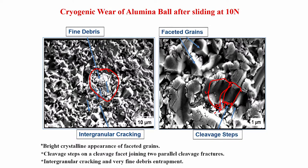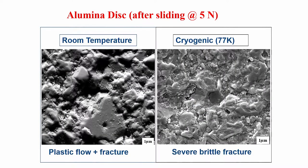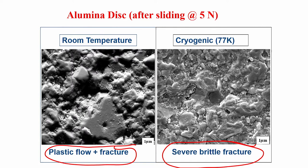Intergranular cracking, fine debris particles, cleavage facets joining two cleavage fracture planes — these are characteristic features of brittle fracture in alumina. Comparing room temperature and cryogenic sliding conditions: in cryogenic sliding there is a deeper groove and finer debris particles. After sliding at room temperature the surfaces are very rough, with fracture features having rounded edges, but we did not see the distinct cleavage steps observed in cryogenic conditions. In summary, at room temperature you have plastic flow and fracture, whereas severe brittle fracture takes place at cryogenic sliding conditions.